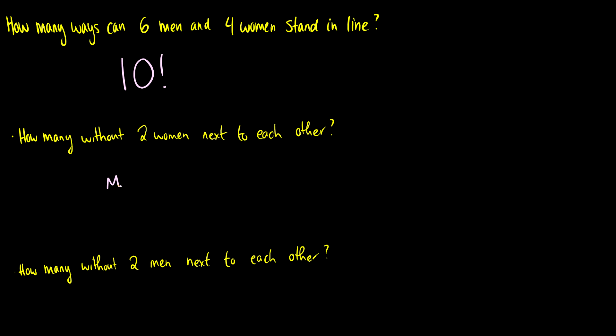Well, what we do is first we order six men. So we're going to draw our six men here. So that's going to be six factorial ways to order the men.